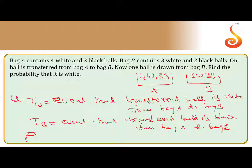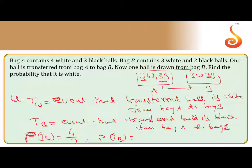The probability that the transferred ball is white: how many white balls are there in Bag A? There are 4 white balls out of 7, so P(TWB) = 4/7. The probability that the transferred ball is black: there are 3 black balls out of 7, so P(TBB) = 3/7.